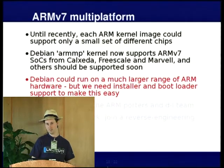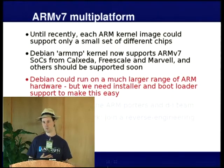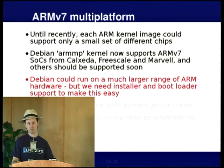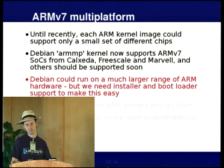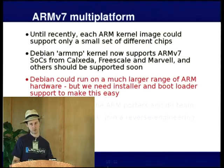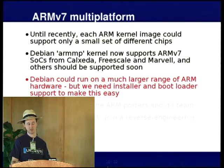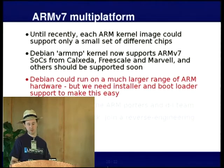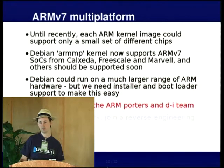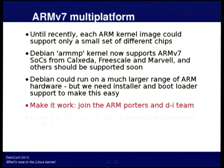So that's the kernel sorted, but we still need an installer that knows how to install on all these various machines, and that is still going to need specific support for specific machines. Similarly with the bootloader — they'll generally have a bootloader installed, which is U-Boot, but they might need a second stage or some configuration. At the moment this isn't easy to do; it's possible but you really need to be an enthusiast to read up on all the details. If you want to make Debian work on new ARM systems, talk to the ARM porters and the Debian installer team on the Debian boot list.